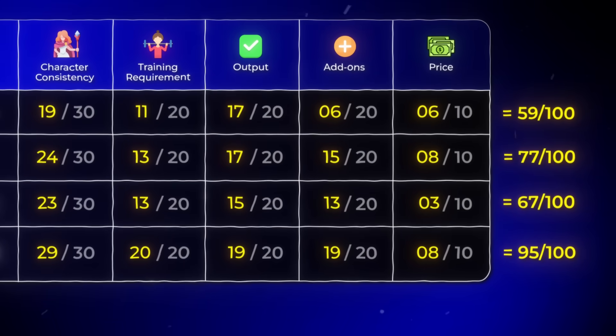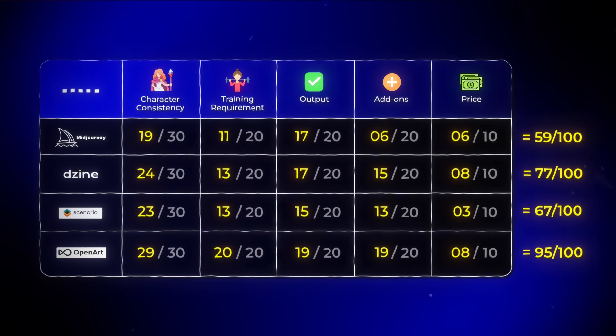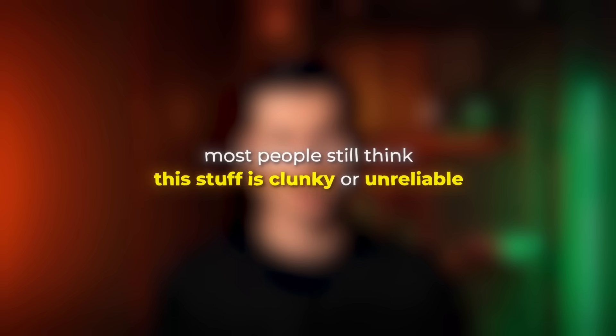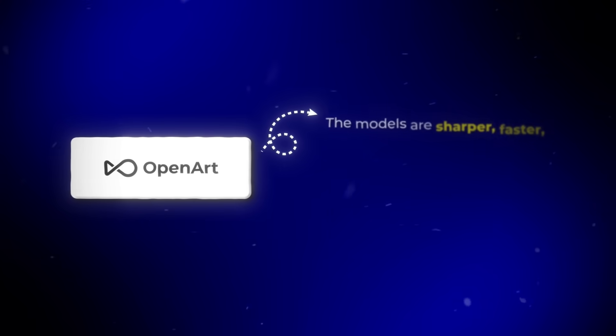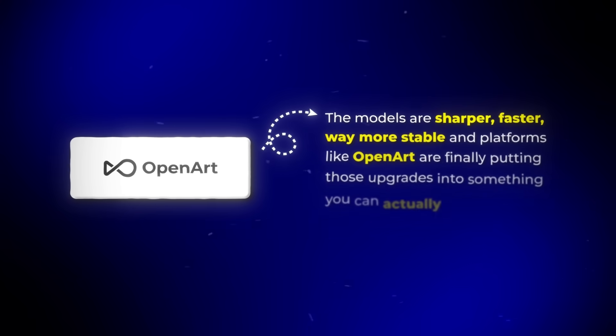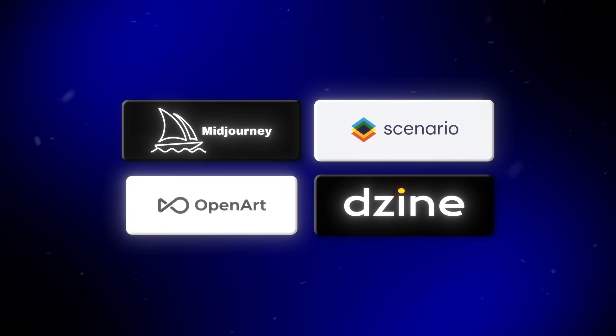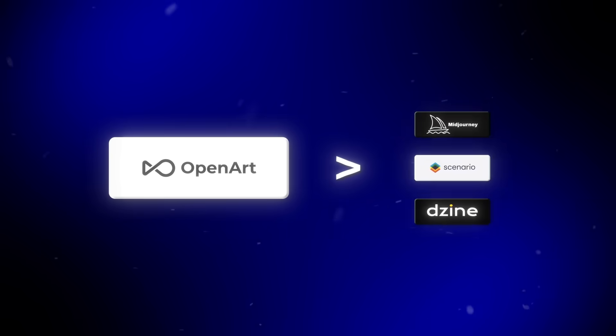The final score is 95 out of 100 — the highest across every tool I tested. When we take a look at the whole board, it is without a doubt a clear winner. Maybe you're wondering: if this thing's so good, why haven't I seen it everywhere already? The answer is simple. We're in that weird phase where most people still think this stuff is clunky or unreliable, but the software itself has already changed. The models are sharper, faster, way more stable, and platforms like OpenArt are finally putting those upgrades into something you can actually use without babysitting every generation. I've spent months testing these platforms, scoring outputs, and tracking reusability — and OpenArt didn't just beat the others, it made the others look like workarounds.